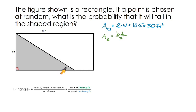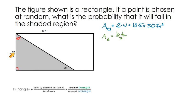We have a 30-degree angle here, and you could conclude that the angle at the top would be 60 degrees, since the interior angles of a triangle add up to 180. You could use trig to find the base of the triangle, but I'd recommend using special right triangles. If the leg opposite the 30-degree angle is 5, then the leg opposite the 60-degree angle would have a measure of 5√3.